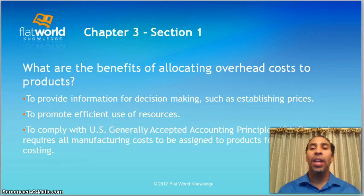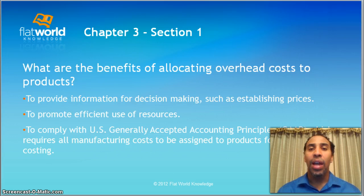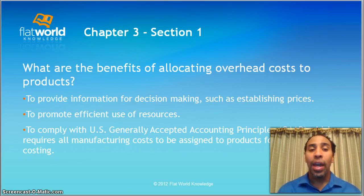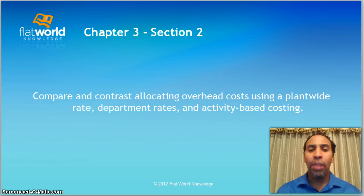What are the benefits of allocating overhead costs to products? To provide information for decision-making, such as establishing prices — I need to know how much I spend as a company in order to make my product, in order to establish how much I'm going to sell it for, because I need to know how much money I want to bring into the company through revenue. We also want to promote efficient use of resources and to comply with U.S. generally accepted accounting principles, which requires all manufacturing costs to be assigned to products for inventory costing. So we'll compare and contrast allocating overhead costs using a plant-wide rate, department rates, and activity-based costing.